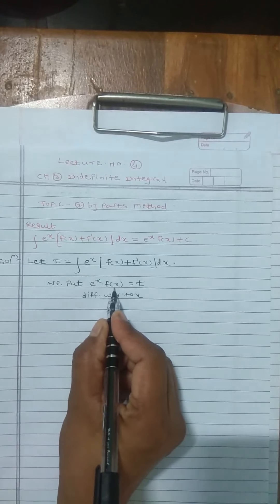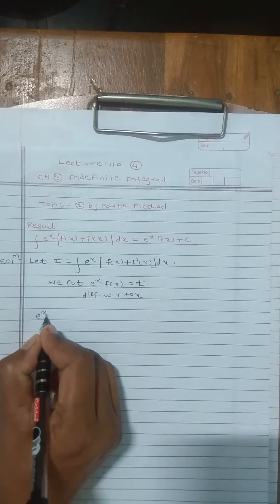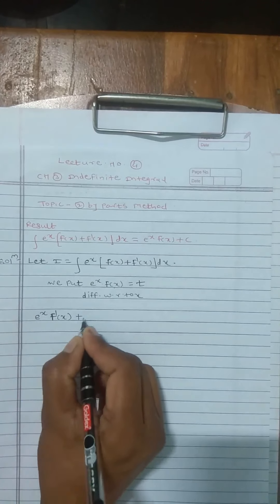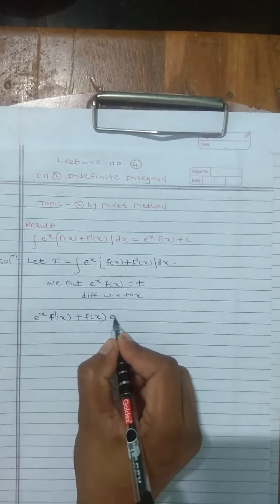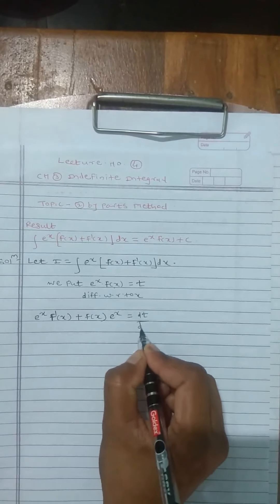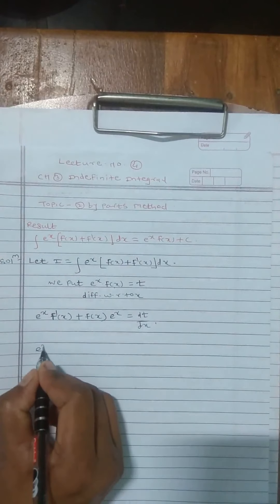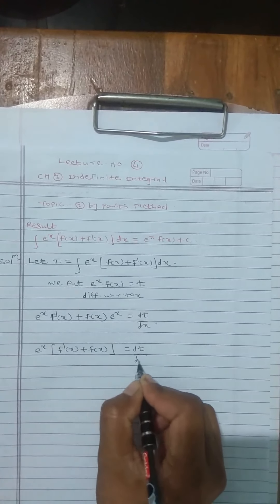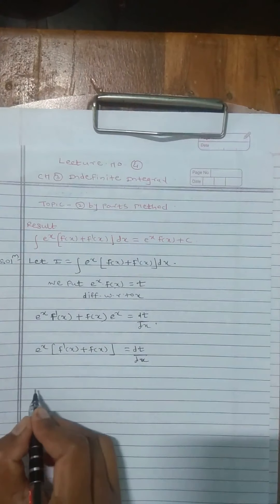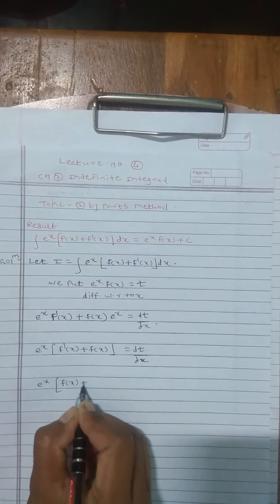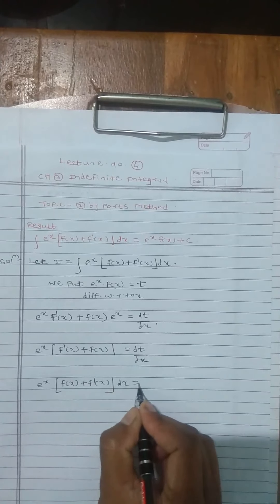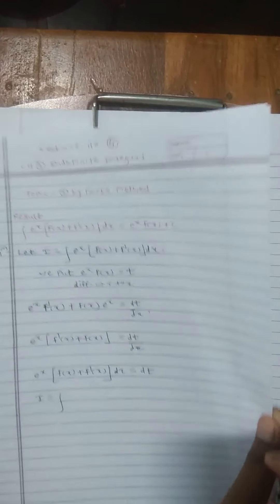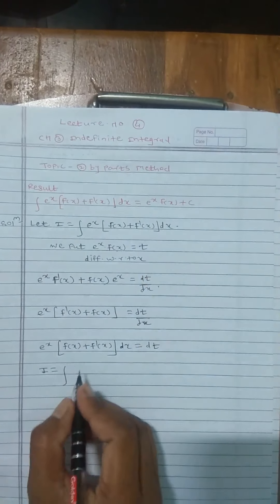Here, apply the u·v rule for the derivative. By the u·v product rule: e^x is treated as one part, so find the derivative of f(x) giving f'(x), plus f(x) times the derivative of e^x. Taking e^x common, the remaining terms are f'(x) + f(x) = dt/dx. So e^x [f(x) + f'(x)] = dt.